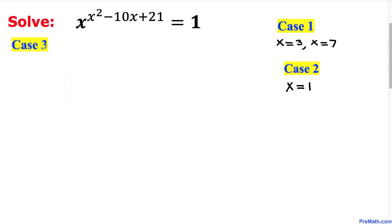And now let's go ahead and consider case 3 and in this scenario our base x must be negative 1 and this exponent x square minus 10x plus 21 must be an even number.